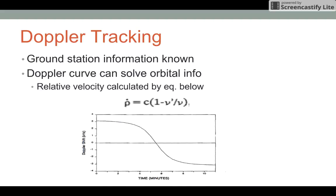The ground station information is known. The Doppler curve then can be solved. The Doppler equation is rho dot, where rho is the range rate, equals C, the speed of light, times the quantity of 1 minus v prime over v, where v prime is the receiver frequency and v is the transmitted frequency.